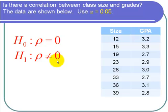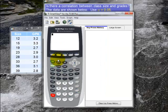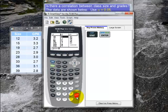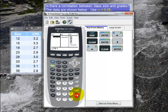To test this hypothesis, I go to my calculator. Here's the calculator. First I enter the data. So I go to STAT and then EDIT. Let's clear out the two lists. And for L1, I put in the size, the class size data, starting out with 12.